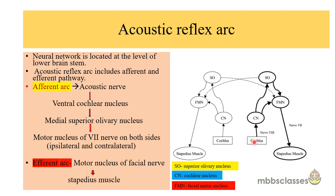Tracing again: from the cochlea, the transmission goes via the eighth nerve to the cochlear nucleus. From the cochlear nucleus it goes to the superior olivary nucleus. From the level of the superior olivary nucleus, transmissions go to both sides — to the same side facial motor nucleus and also to the opposite facial motor nucleus, which explains the contralateral acoustic reflex. From the motor facial nucleus on both sides, it supplies the stapedius muscle, and on exposure to loud noise, the stapedius muscle contracts because of the acoustic reflex arc.